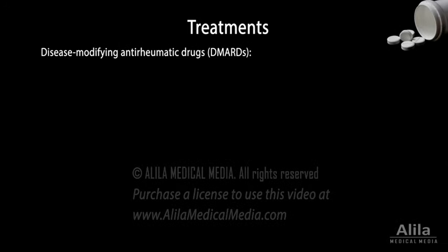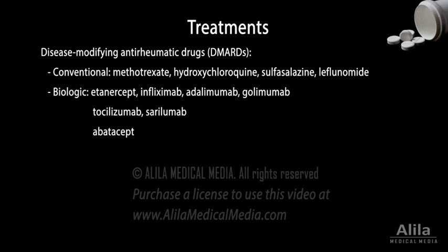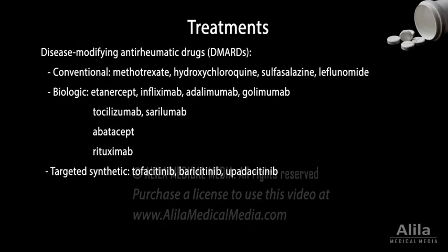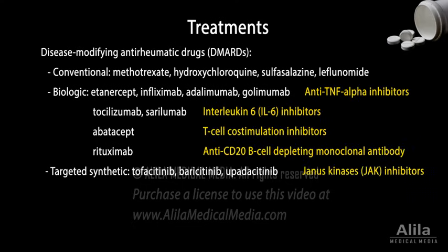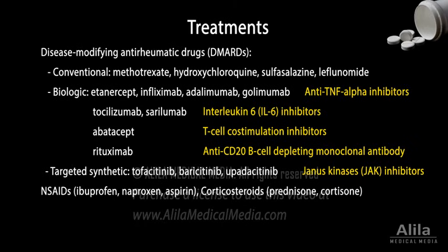Early treatment with disease-modifying anti-rheumatic drugs can help prevent irreversible damage to the joints. There are three drug classes: conventional, biologic, and targeted synthetic. Each has its pluses and minuses, and different drugs have different mechanisms of action, interfering with different steps in the complex inflammatory pathways. Non-steroidal anti-inflammatory drugs and corticosteroids are often prescribed to reduce pain and inflammation. Physical therapy can help restore joint function. Severely damaged joints may require surgery to correct deformity or replace with an artificial joint.